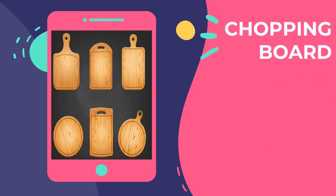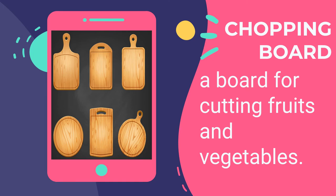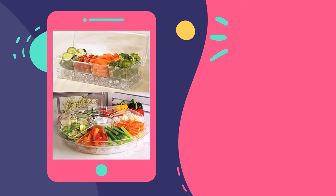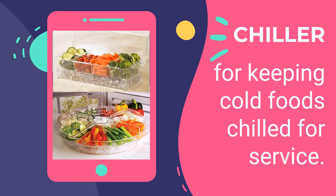The chopping board is a durable board for cutting fruits and vegetables. Kitchen cutting boards are commonly used in food preparation and are often made of wood or plastic, coming in various widths and sizes. The chiller is used for keeping cold foods chilled for service — a machine for cooling something, specifically a cold cabinet or refrigerator for keeping stored food a few degrees above freezing.